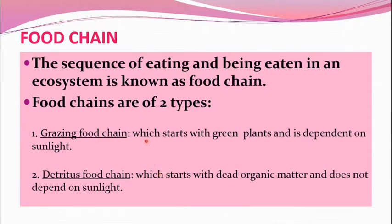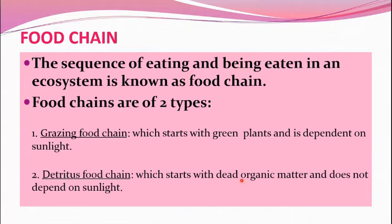The grazing food chain starts with a green plant and is dependent on sunlight, continuing from green plants to herbivores to carnivores. The detritus food chain starts with dead organic matter — a fallen leaf can become food for a detritivore. The organisms which depend on this detritus are called detritivores, and the chain continues from dead organic matter consumed by detritivores onward.